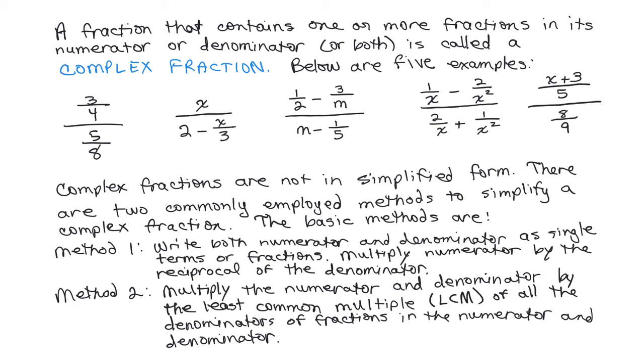In method 2, you don't need to have it in the form as the very first example up here. Instead, to simplify the complex fraction, the first step would be to multiply the numerator and denominator by the least common multiple of all the denominators of all the fractions in the numerator and the denominator.